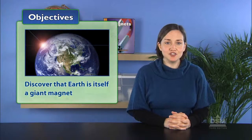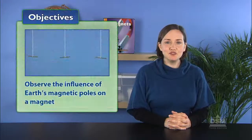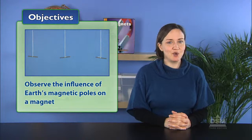In Activity 7, Earth, a Giant Magnet, students first discover that the Earth itself is a giant magnet and then observe the influence of the Earth's magnetic poles on a magnet.